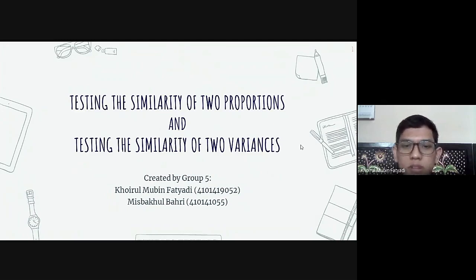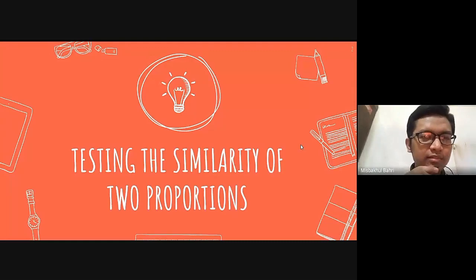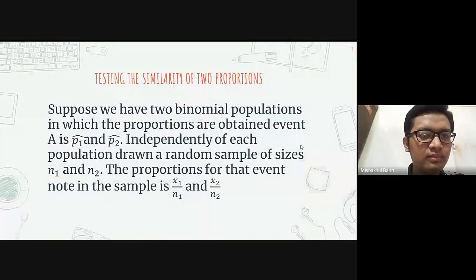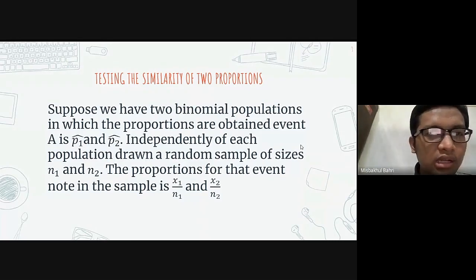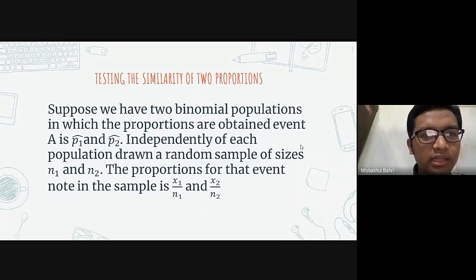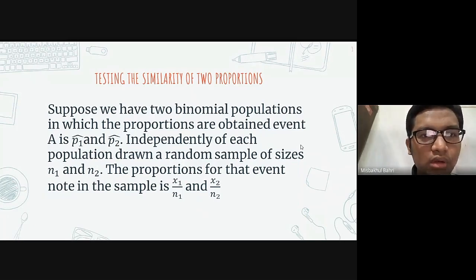Okay, let's start. I will explain about testing the similarity of two proportions. Suppose we have two polynomial populations in which the proportions are P-hat 1 and P-hat 2. Independently, from each population a random sample of size N1 and N2 is drawn. The proportion for that event in the sample is X1 over N1 and X2 over N2.